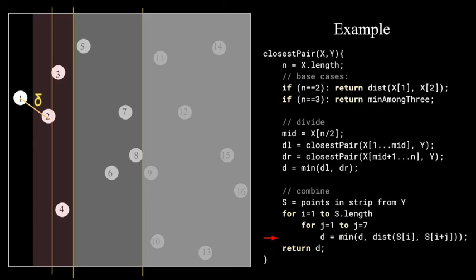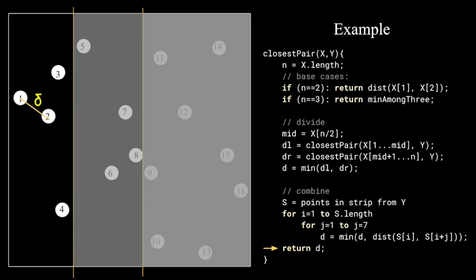We find delta L and delta R and the minimum between those two. Next, we combine by looking at the strip. We always look at the next 7 points for each point in the strip, or we stop if we have already exhausted all the other points in the strip before that. In this case, we don't find any closer pair in the strip, so we just return delta.